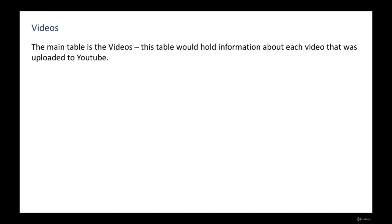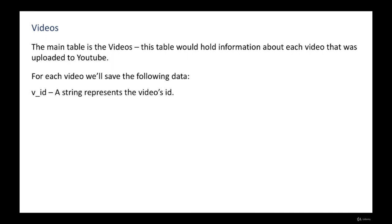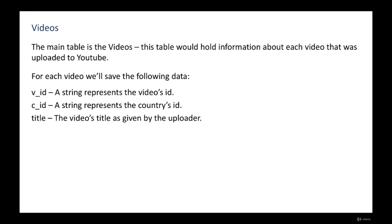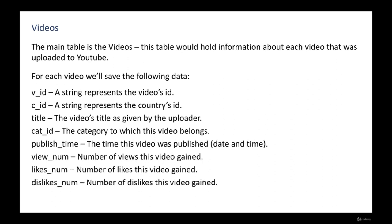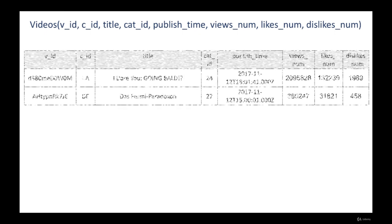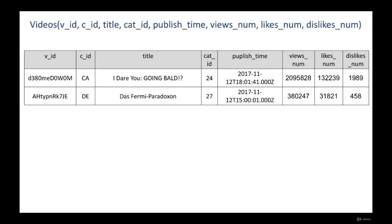The main table in our database is the videos table. It holds information about each video uploaded to YouTube. For each video we save: a string representing the video ID; a string representing the country ID the video came from; the title as given by the uploader; cat_ID for the category; publish_time in date-time format; view_num for total views; likes_num for total likes; and dislikes_num for total dislikes. The video's ID is unique but unique per country — the same video ID can appear in two different countries. So the primary key is the combination of video ID and country ID.